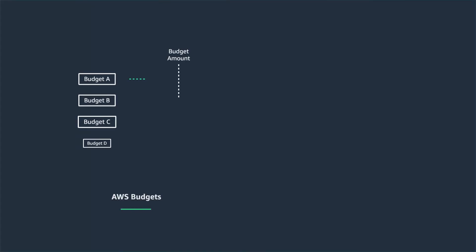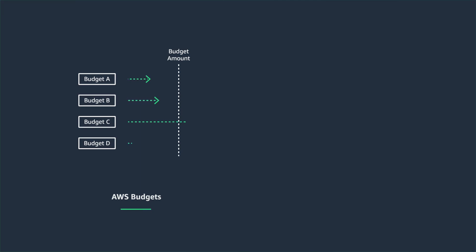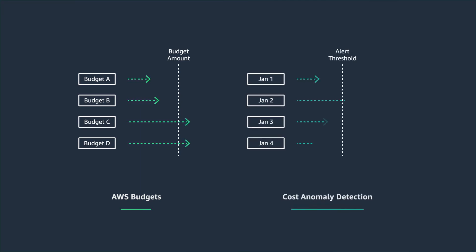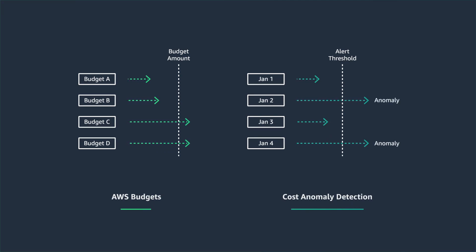Now I have discussed two cost control services, but not all alerts tell the same story. AWS Budgets notifies you when your usage exceeds the budget threshold. Cost Anomaly Detection tells you when you're spending abnormally based on your usage patterns, so you know how to respond when different alarms trigger.